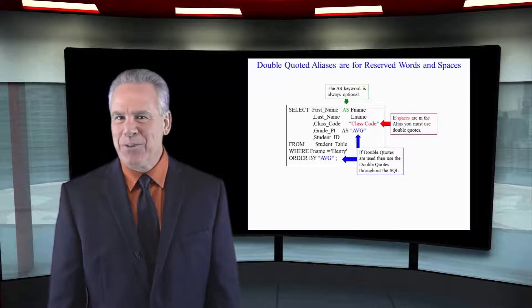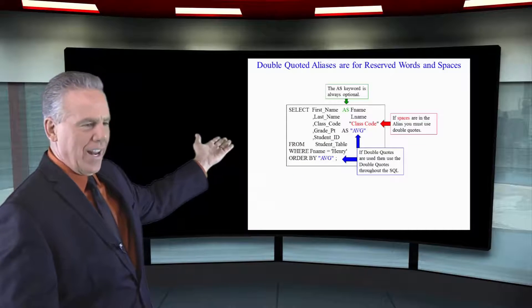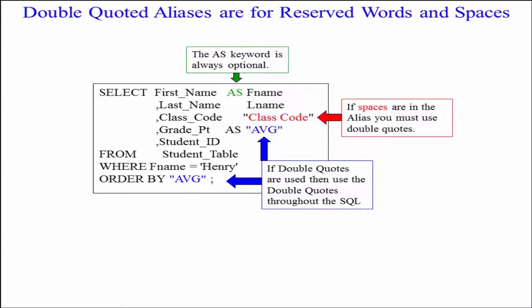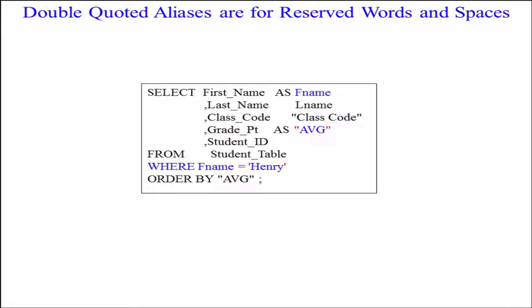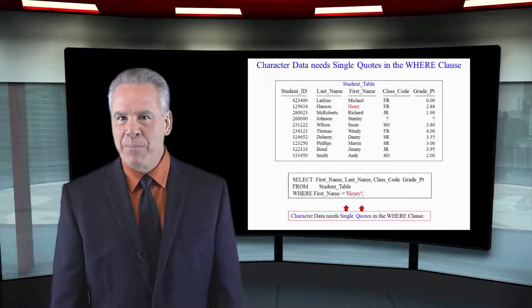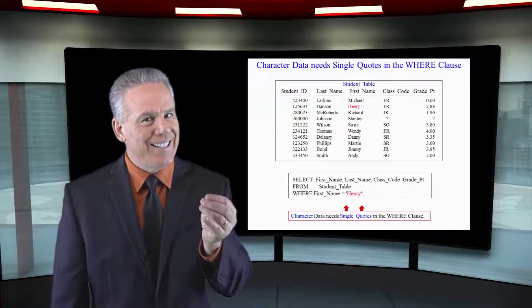We've got a lot of aliasing right here. We've got F_name with double quotes, "class code" with double quotes, and "average" with double quotes — there's a space in 'class code' and 'average' is a reserved word. We can use the aliasing anywhere else in the SQL, such as WHERE F_name equals 'Henry', ORDER BY "AVG".